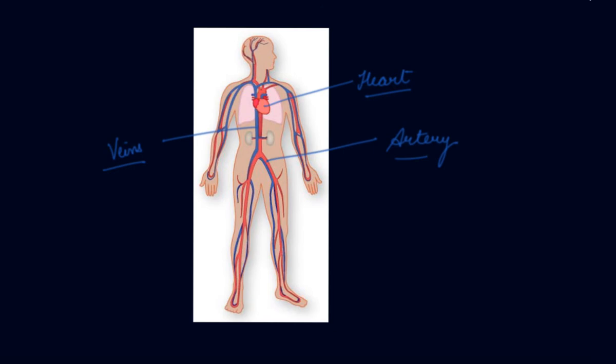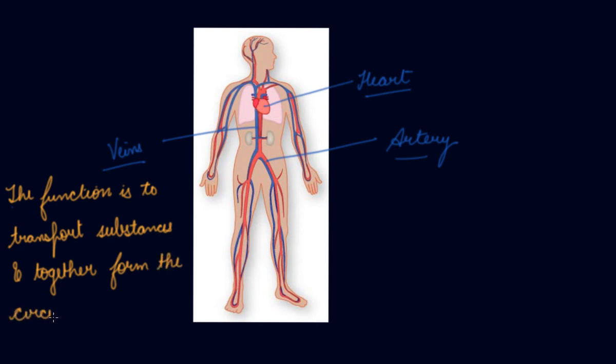Now what are they? Function. The function is to transport substances and together form the circulatory system. Now their main function is to transport the nutrients and the oxygen and the various other substances to the cells of your body, in order to function so that your body can function properly.